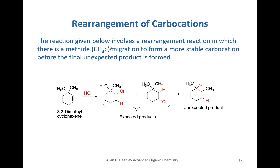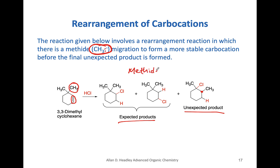Another type of migration is the methide migration — the migration of an alkyl group, in this case a methyl group, with its electrons. Looking at the reaction with HCl: expected products can form, but there's also an unexpected product where one of the methyl groups appears to have migrated to an adjacent carbon. What happens is that the carbocation is generated, then this methyl group migrates to give the more stable tertiary carbocation, and then Cl⁻ attacks. This is called a methide migration.